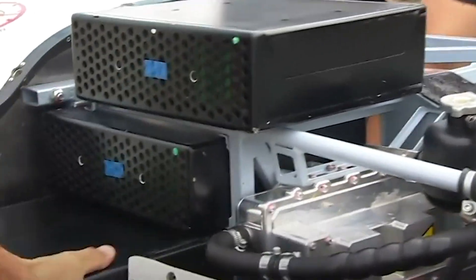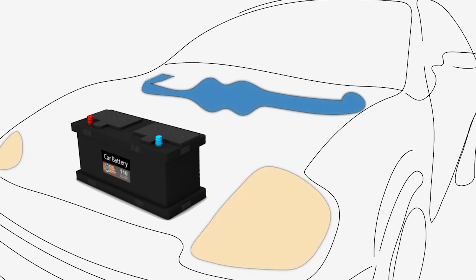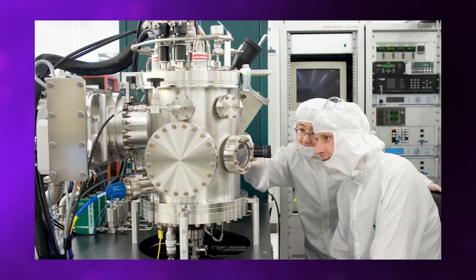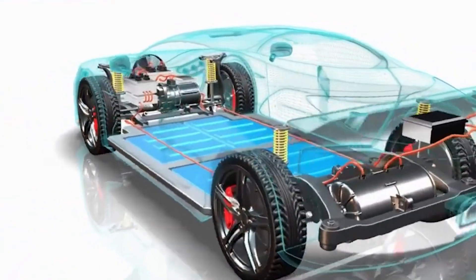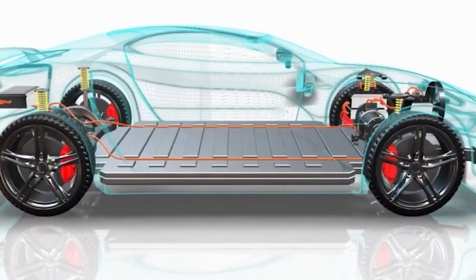But there's something even more radical emerging. Structural batteries where the vehicle frame itself stores energy. Researchers at Chalmers University demonstrated a prototype battery that's 20% lighter than conventional battery packs because it serves dual purposes, providing structural support while storing electrical energy.